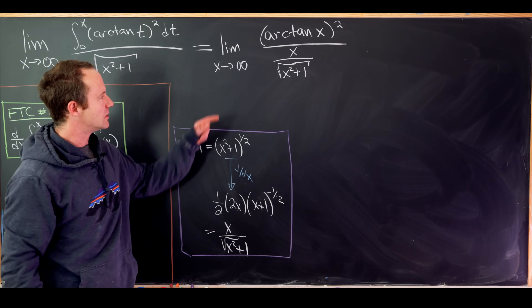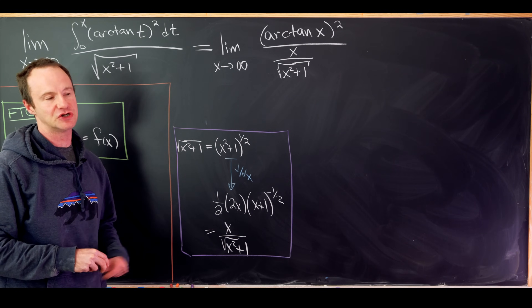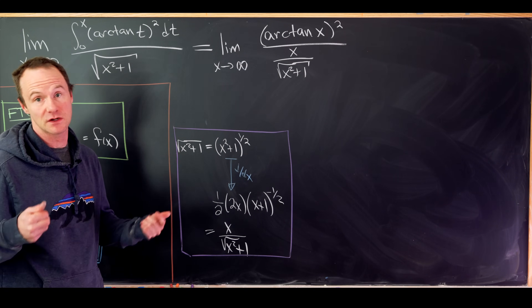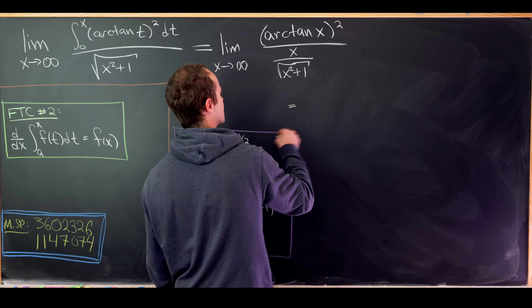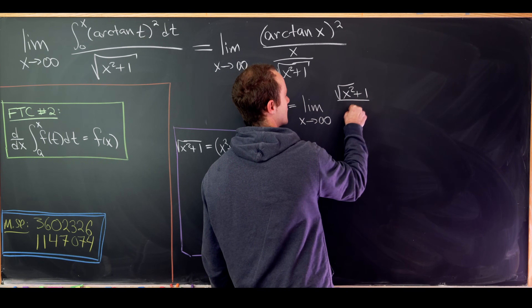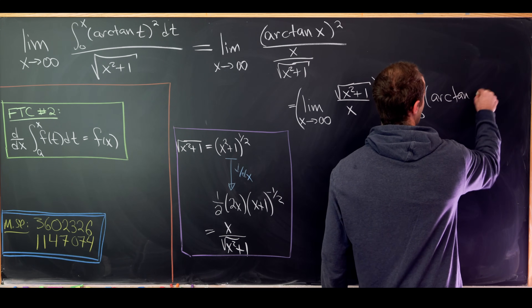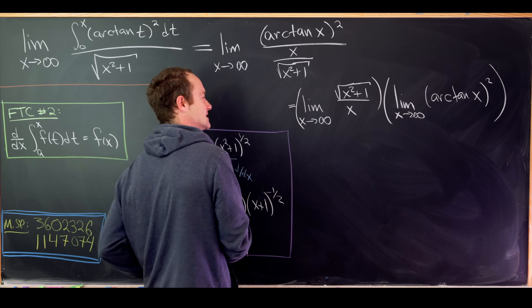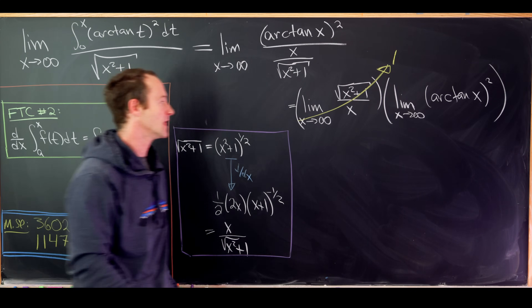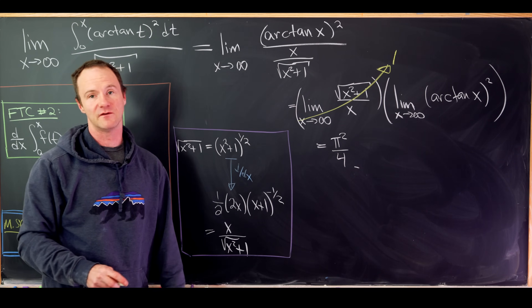So after applying L'Hôpital's rule we can write the expression as arctan(x)² divided by x/√(x²+1). As x goes to infinity, the term √(x²+1)/x approaches one since numerator and denominator have the same degree, and arctan(x) approaches π/2. Using the product rule for limits, this gives us 1 times (π/2)², which equals π²/4. That's the final value of this limit.